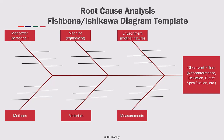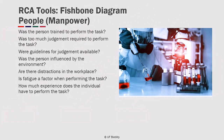This slide provides a template of an Ishikawa or Fishbone diagram used for root cause analysis. The template has spaces where ideas can be added to each of the six categories, which are: people or manpower, equipment (also referred to as machines), environment (formerly referred to as Mother Nature), methods, materials, and measurement.